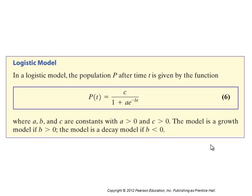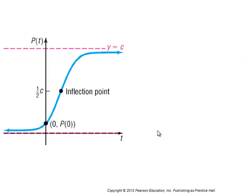The logistic model, which is more realistic, has population P as a function of time T given by P(t) = C / (1 + Ae^(−Bt)), where C, A, and B are constants, with C and A both positive. It's a growth model if B is positive, or a decay model if B is negative.